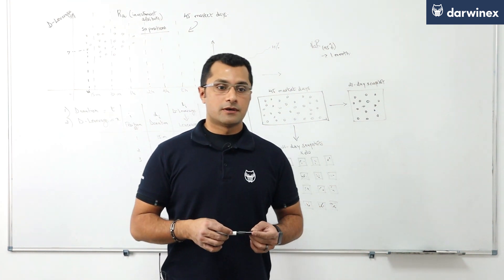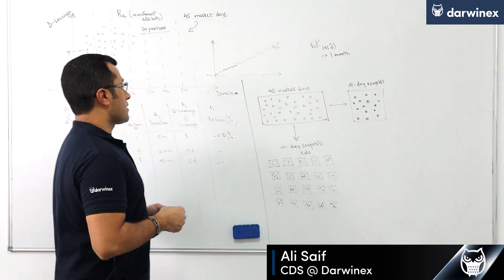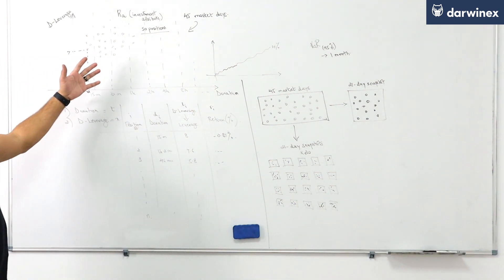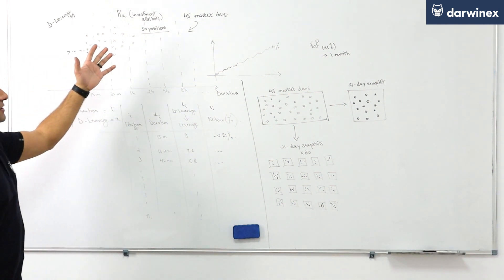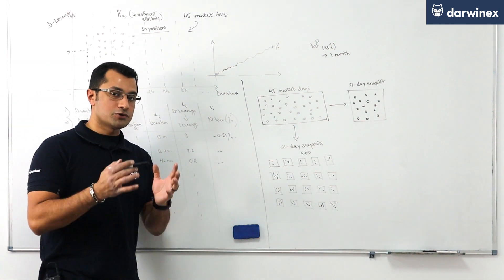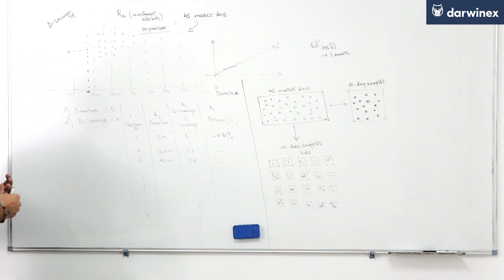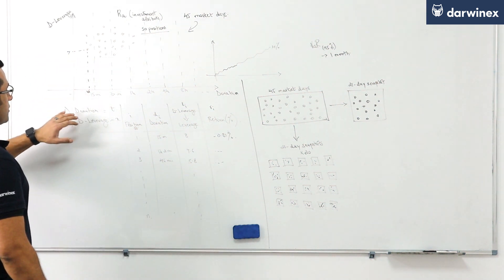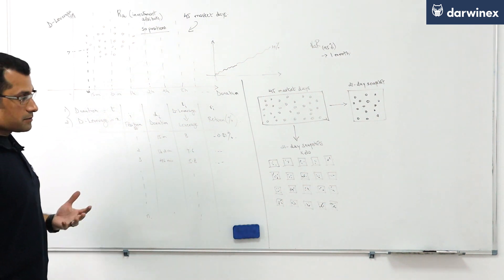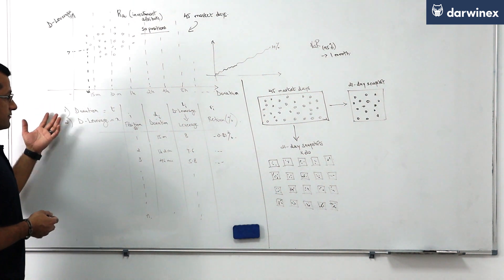So in the last tutorial, which was Part 1 of the calculation of Value at Risk at DarwinX, we got as far as basically getting our position data from the last 45 market days, that position data being representative of the trader's most recent risk behavior. We highlighted that each position gives us duration and d leverage, among other variables, but for our purposes for calculating value at risk, we need only concern ourselves with duration and d leverage.